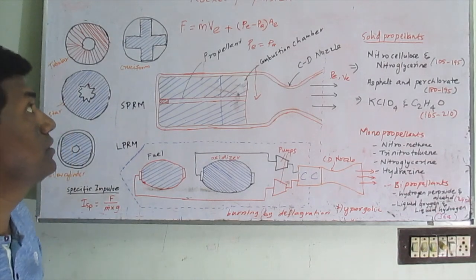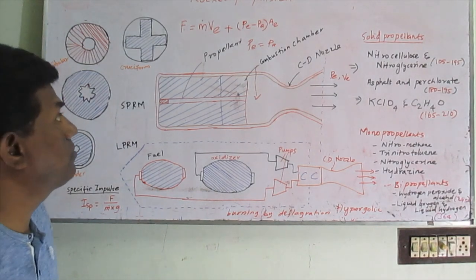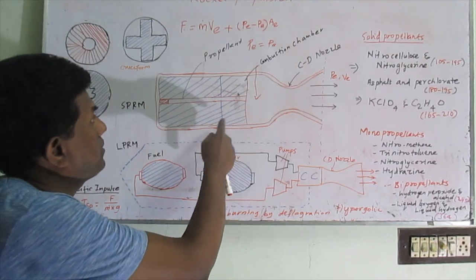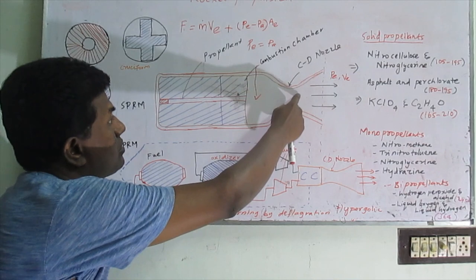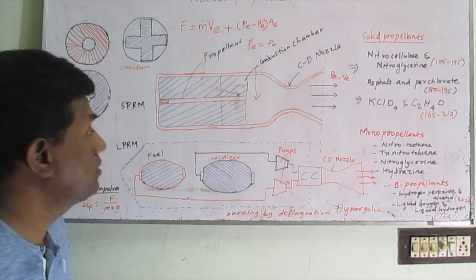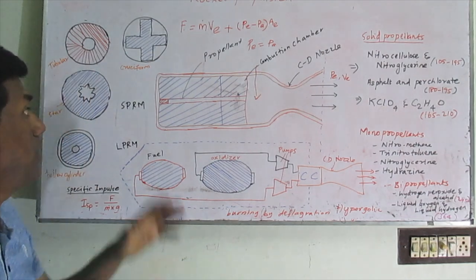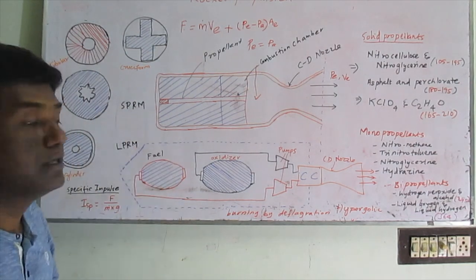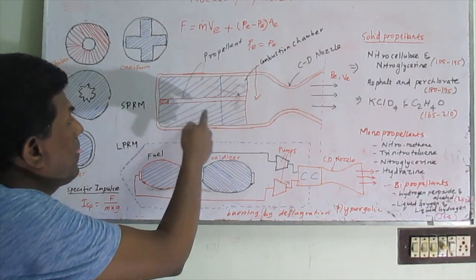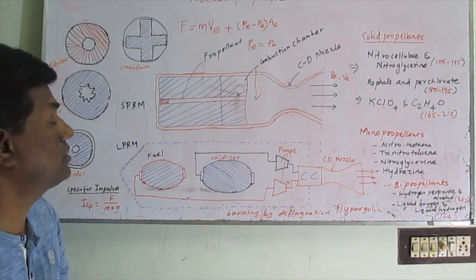First we will see about solid propellant rocket motors. The important parts are the combustion chamber, expansion nozzle (convergent-divergent nozzle), and an igniter. The igniters are like detonators containing highly reactive explosive material like lead oxide, which is used for igniting the propellant.